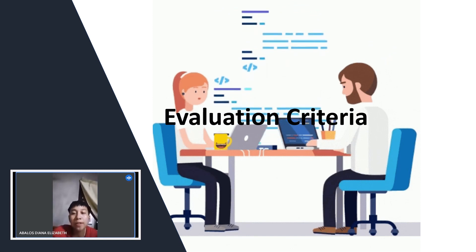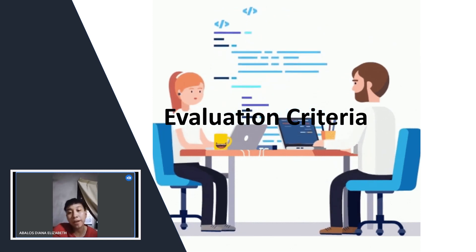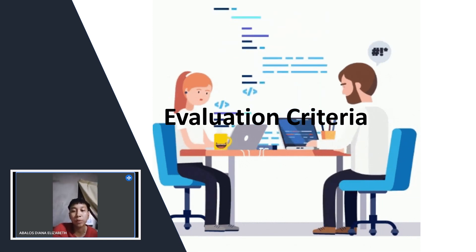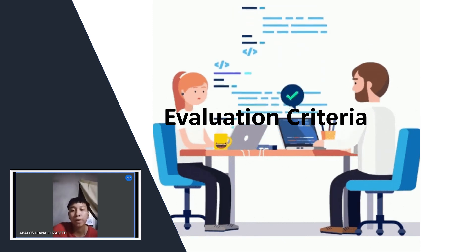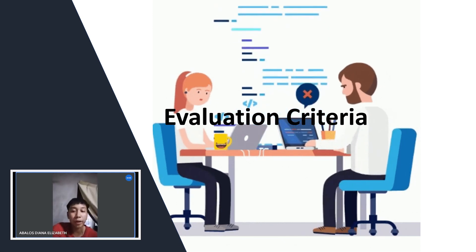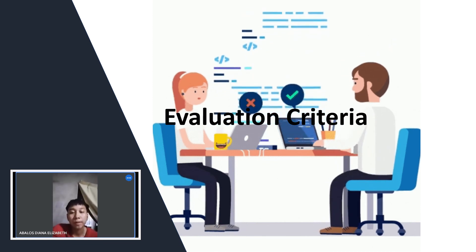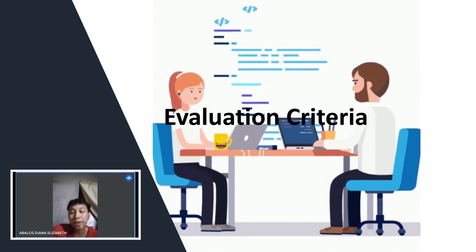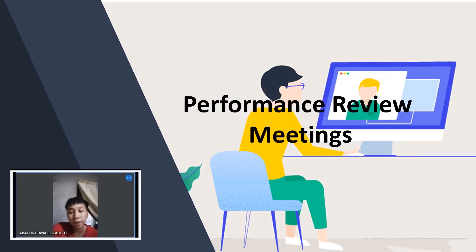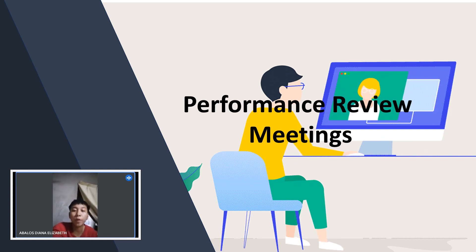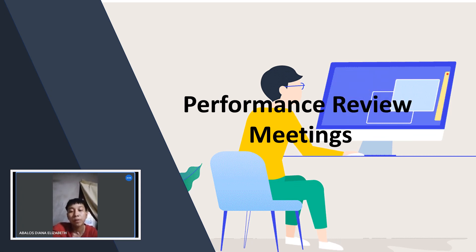Evaluation criteria involves defining the criteria against which employee performance will be measured. This may include factors such as quality of work, productivity, communication skills, teamwork, and company values. Performance review meetings involve conducting formal meetings between managers and employees to discuss performance, review accomplishments, provide feedback, and set goals for the future.